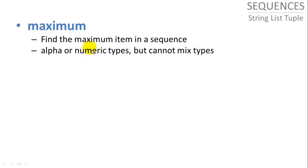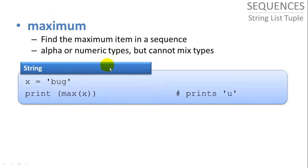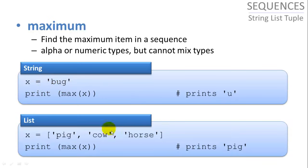Maximum is going to find the maximum item in a sequence, again lexicographically. And they have to be all the same type, either numeric or string type. So if we take the maximum bug, we get u. And if we take the maximum of pig, cow, and horse, we're going to get pig because it comes last alphabetically.